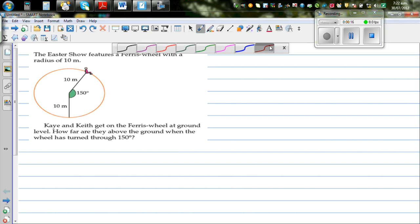What else is given? So one more information. Kay and Keith get on a Ferris wheel at ground level. So they're starting at ground level and this is the ground level and say they're going anti-clockwise. They're going this way. How far are they above the ground when the wheel has turned 150 degrees? So the wheel has turned 150 degrees and Keith or Kay is here.